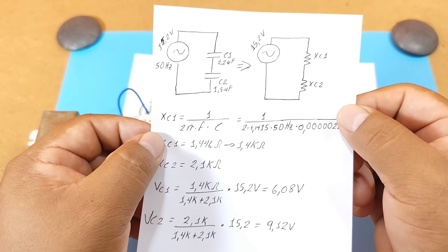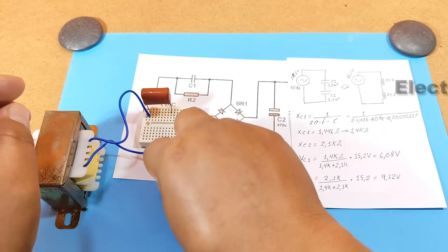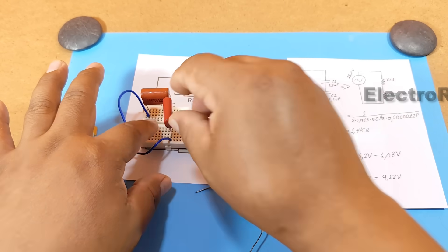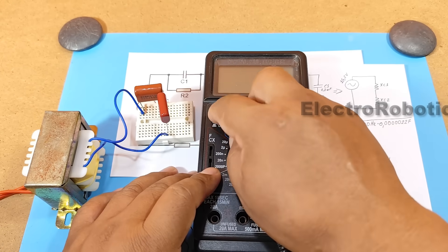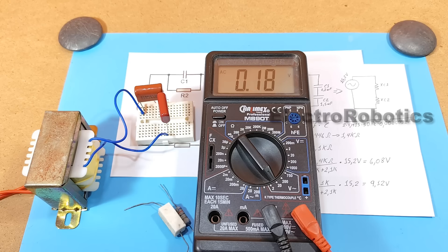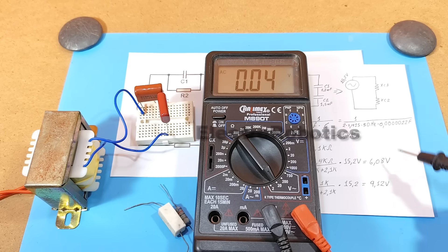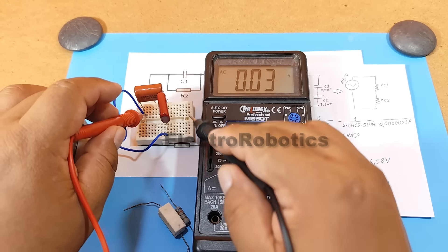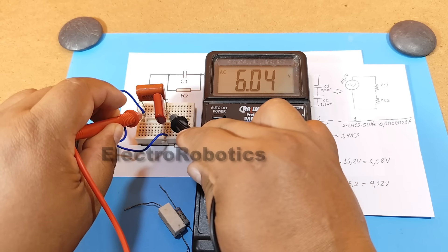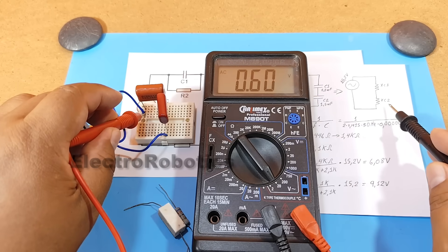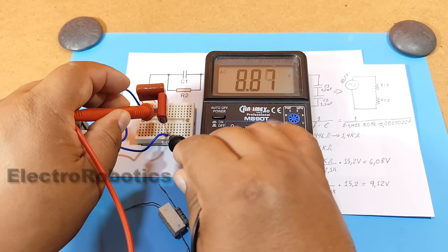Let's confirm this with the multimeter. There we have 6 volts, or something close to it. The voltage across C2 should be approximately 9 volts, and we have close to 9 volts.